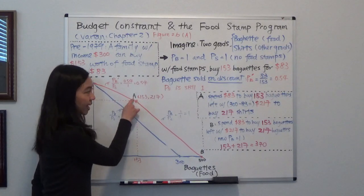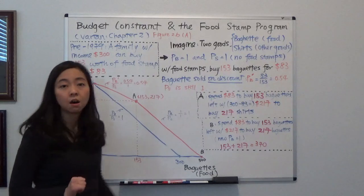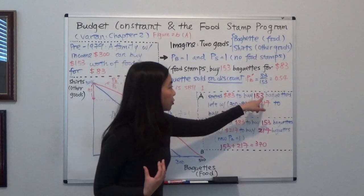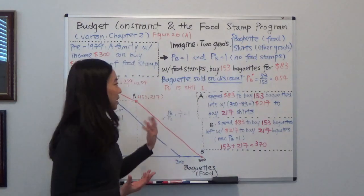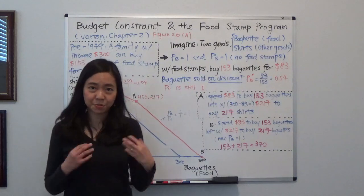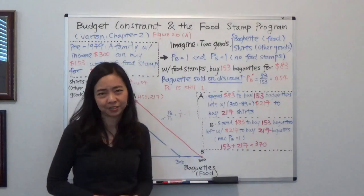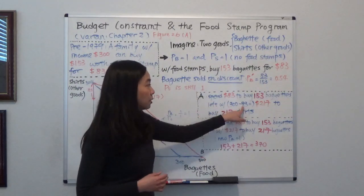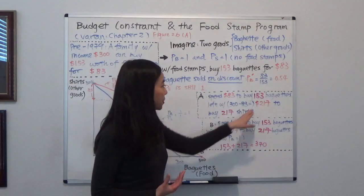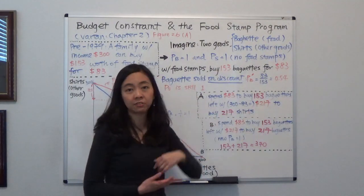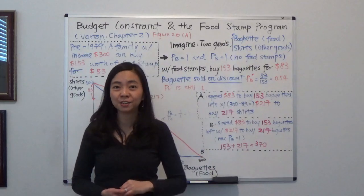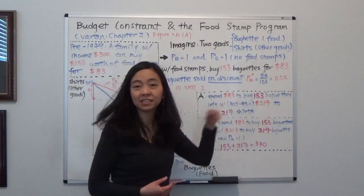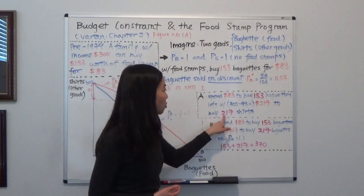This point is called point A. That is you spend all the $83 that you're allowed to buy food stamps to buy the 153 baguettes on discount. So how many t-shirts can you buy with the rest? Well, initially you have $300 and you spend $83 to buy the baguettes on discount. So you're left with $217. So with that money, how many t-shirts can you buy? We know the price of t-shirt is $1. So with $217, you can now buy 217 t-shirts.